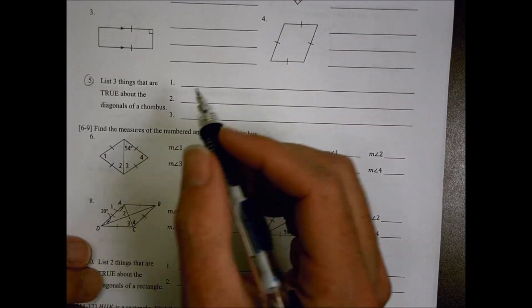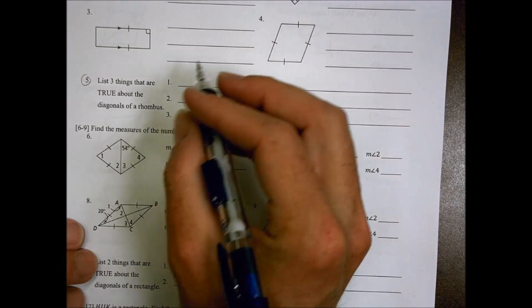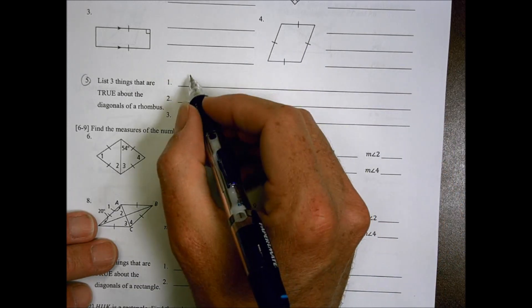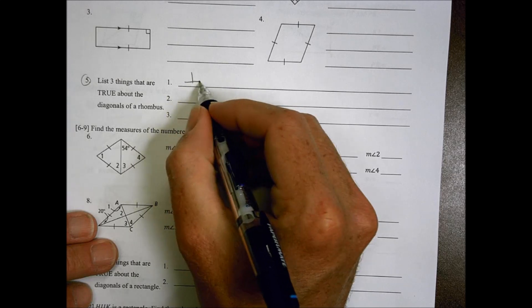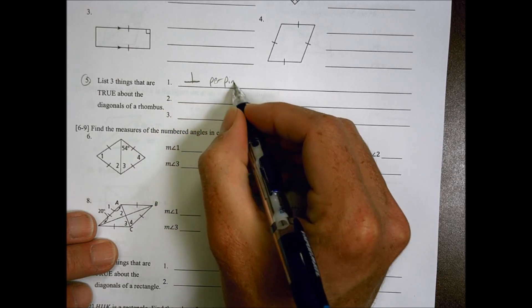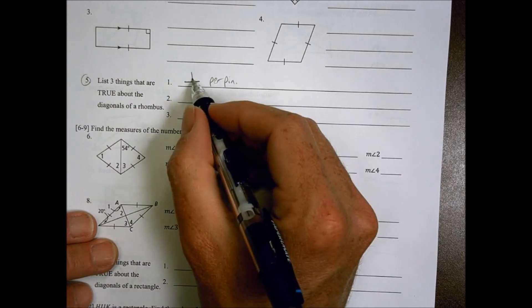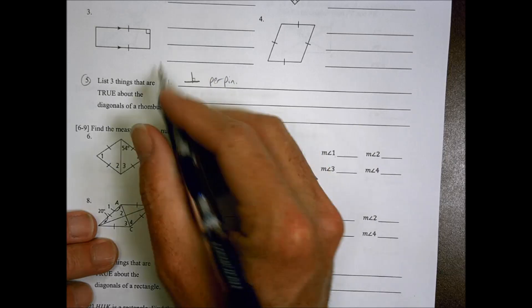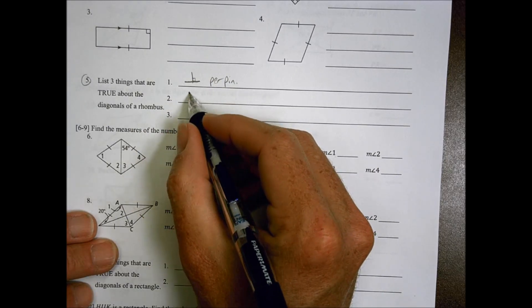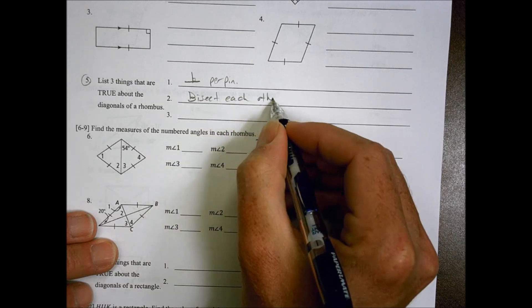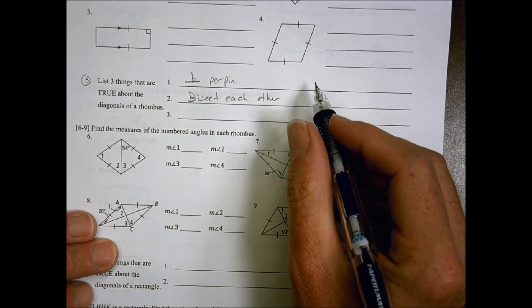Starting with number 5, it says list three things that are true about the diagonals of a rhombus. When you're dealing with the rhombus and the diagonals, we know that the diagonals are going to be perpendicular to each other. They're going to be 90 degrees when you cut those things in half there. We also know that those diagonals are going to bisect each other, meaning they're going to have equal sides to them.